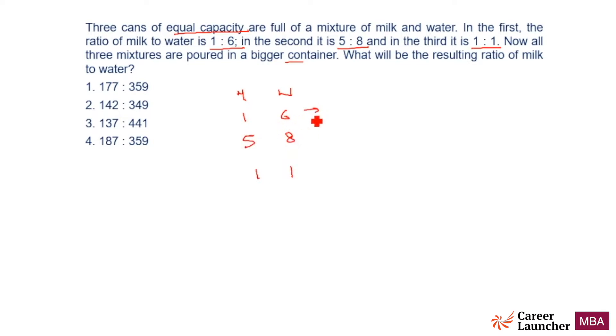That means total is going to be 7 out here, 8 plus 5 is 13, and 1 plus 1 is 2. So what capacity do I want to take? I will take a capacity which is a multiple of 7, 13, and 2.